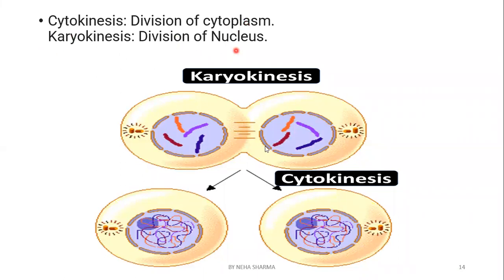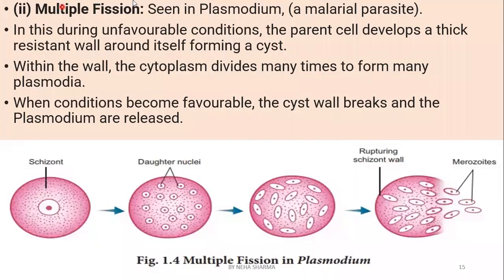Multiple fission is seen in Plasmodium, a bacterial parasite. When conditions are unfavorable, the parent organism forms a protective layer around itself called a cyst - a round pink-colored wall. Inside the cyst, the cytoplasm divides multiple times. When conditions become favorable, the cyst ball breaks and many merozoites are released.